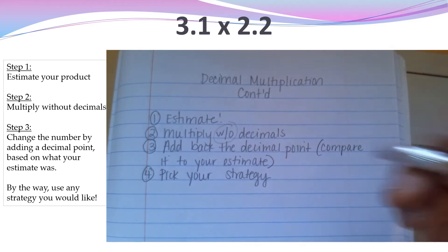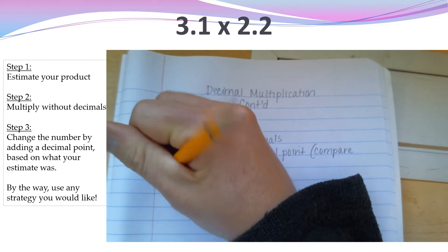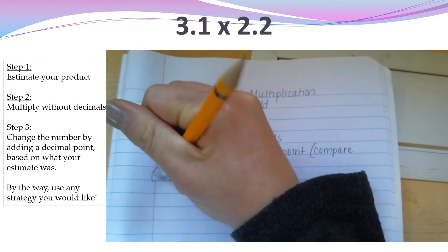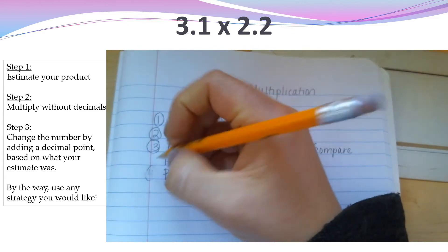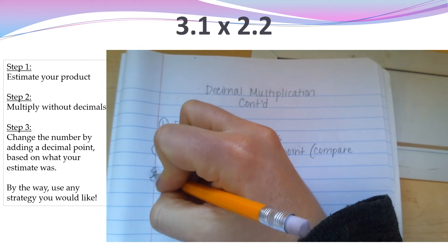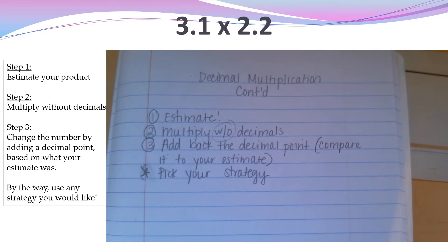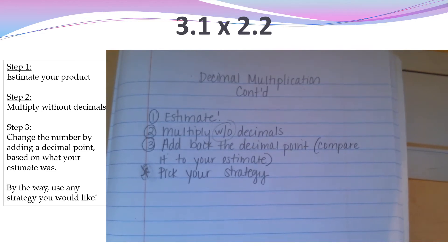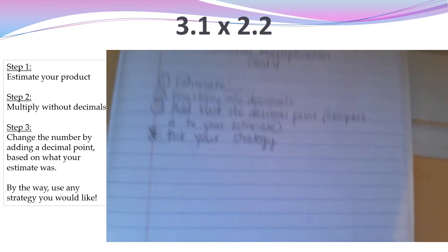Actually, that's not really a step four — I'm going to put a little star. You get to pick which multiplication strategy you want. I taught you three of them yesterday that you can pick from. So let's do three and one-tenth times two and two-tenths.